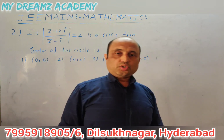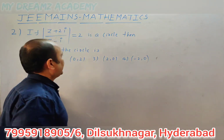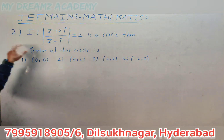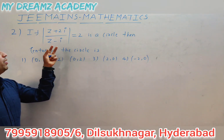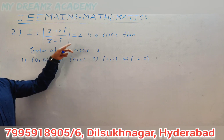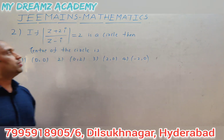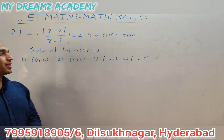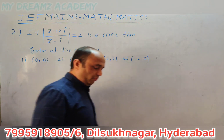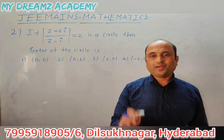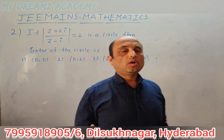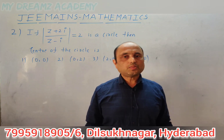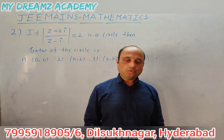Next question, also from complex numbers, related to a circle. The condition is |z + 2i| / |z - i| = 2, which is a circle. The given circle is not in the general form, so we know the general form: x² + y² + 2gx + 2fy + c = 0. But this is in terms of complex numbers.